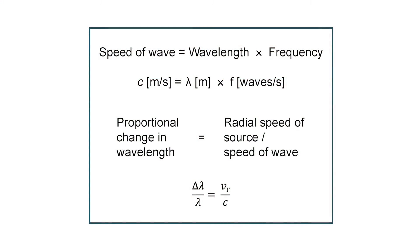From our experiment, we conclude that the pitch of a source depends on the relative speed of the source towards or away from the observer — called the radial speed of the source. The faster the speed, the greater the change in pitch. If the source is moving away from the observer, the pitch decreases; if it's moving towards the observer, the pitch increases.